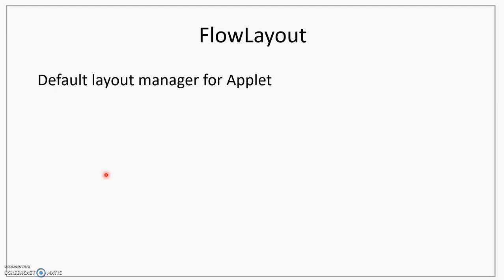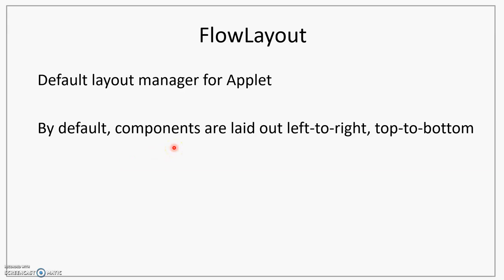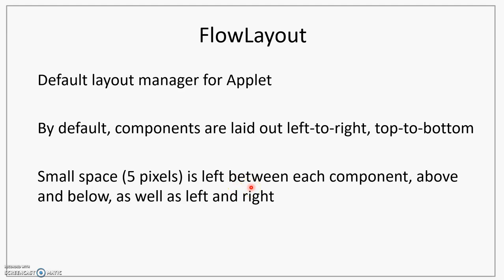Let's look at FlowLayout. For the applet, FlowLayout is the default layout manager. This means that in the applet, if we do not call setLayout, then the default layout manager used is FlowLayout. In FlowLayout, by default, the components are going to be placed left to right and then top to bottom. Between each component, there will be a small space of about 5 pixels left, both above and below as well as left and right.